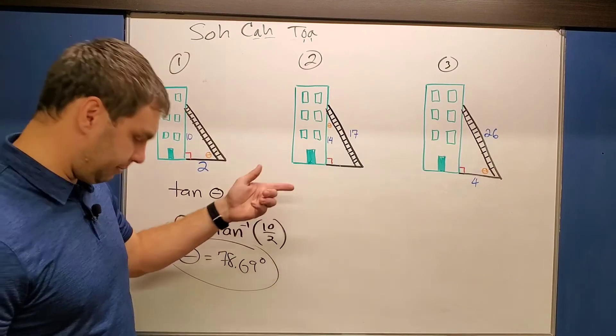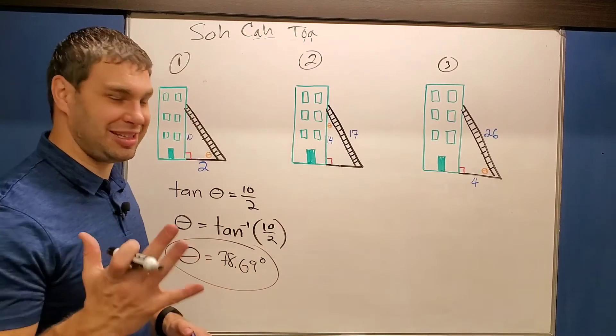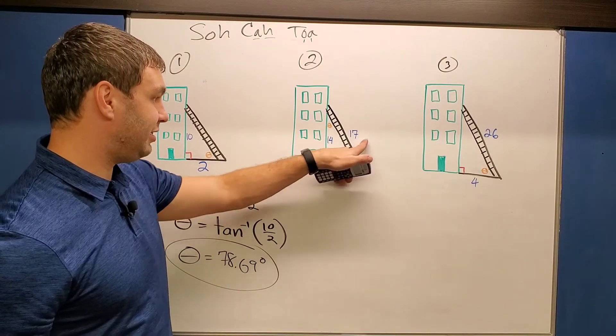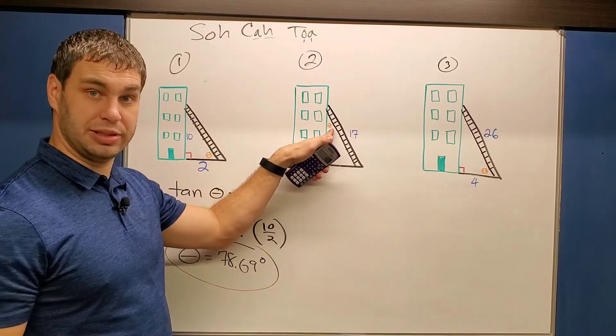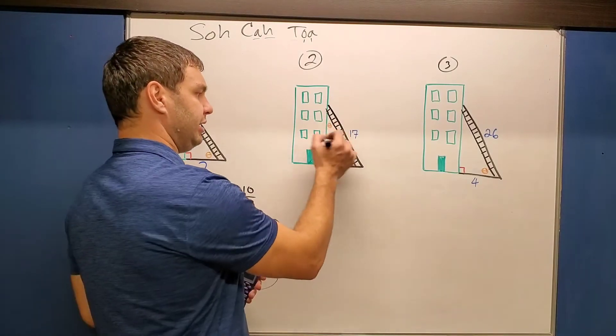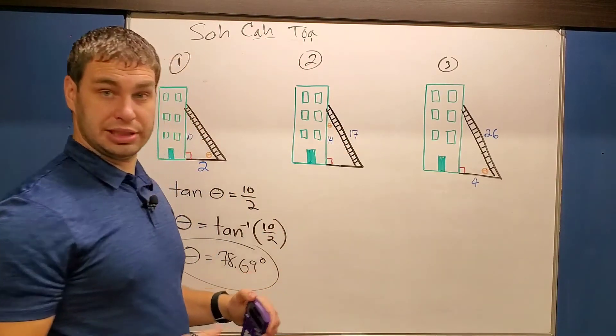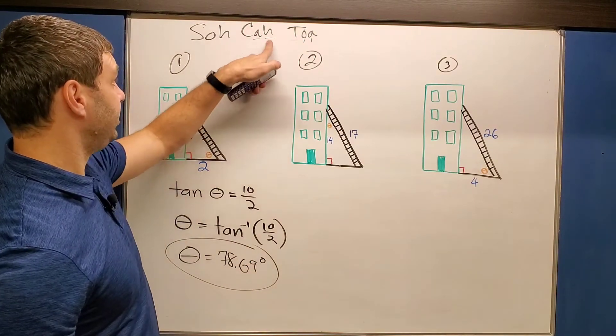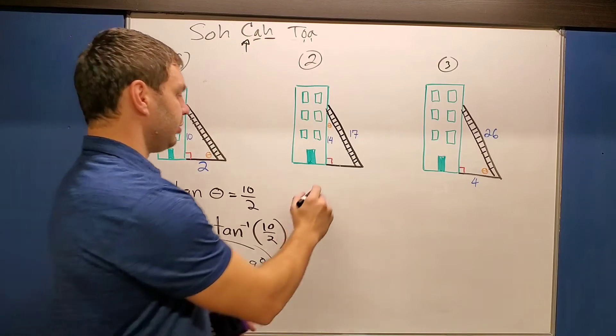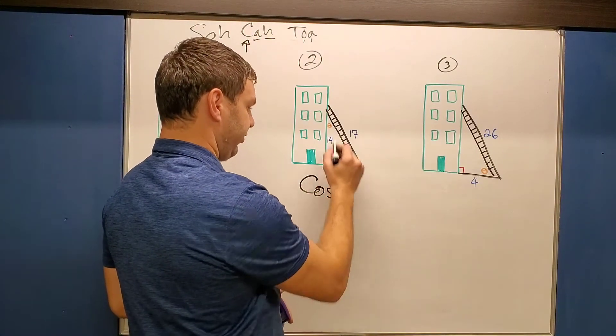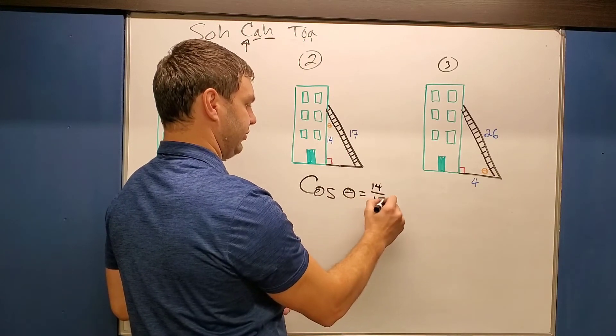Problem number two, this time we have 14 and 17 in these positions. And we're trying to find this angle between the building and the ladder. So again, compared to this angle, I have the adjacent and the hypotenuse. The adjacent and the hypotenuse is going to be cosine, right? The A and the H. So that's going to be cosine there.